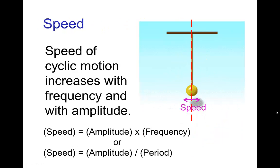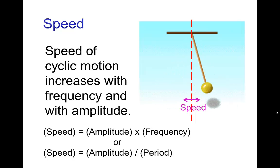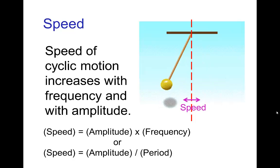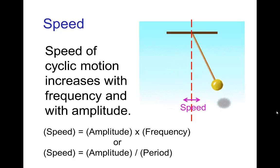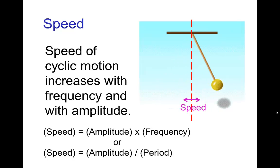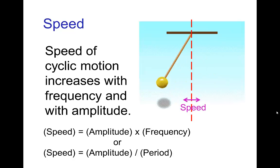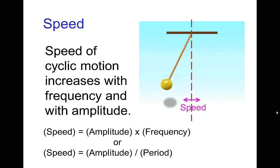The last element we care about in periodic or cyclic motion is the speed of the motion. Speed depends on both frequency and amplitude — the larger the frequency or the larger the amplitude, the faster the motion. In fact, speed can be defined as amplitude times frequency, which is the same as amplitude divided by the period.